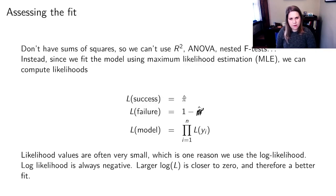And the likelihood values are often very small. That's one of the reasons why we use the log likelihood. And the log likelihood will always be negative. If we have a larger log likelihood, it's closer to 0, it's therefore a better fit.